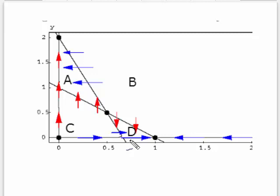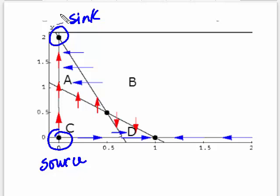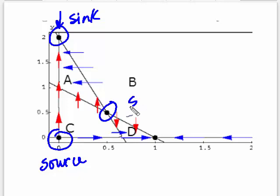Now we're back to the phase portrait for that system, showing just the nullclines and equilibrium points. The equilibrium at the origin is a source — you could have guessed it from looking at it. The equilibrium at (0, 2) is a sink, though you'd need more information from the arrows to see that clearly. The two remaining equilibria are saddles. Again, we did not find any eigenvectors — we stop at classifying the equilibrium points.